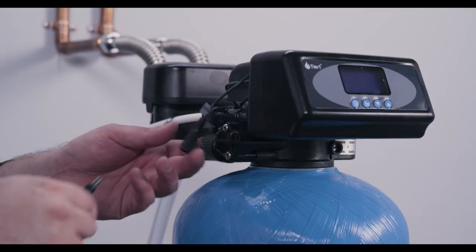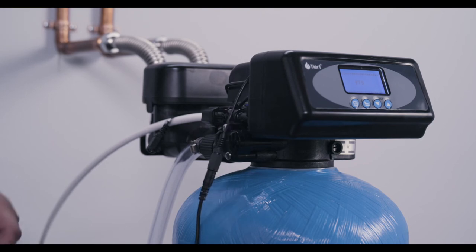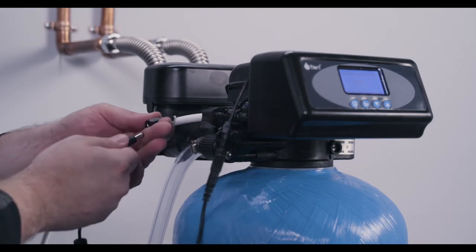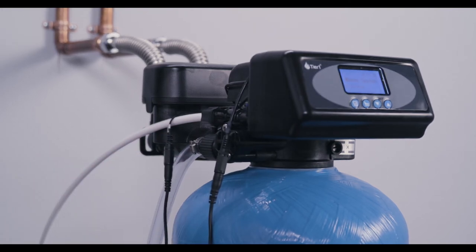Once the system flushing has completed, you're ready to plug in your control valve to start the program. Attach one plug of the power cord to the control valve power cord and the other plug to the bypass power cord. Plug in the power cord.